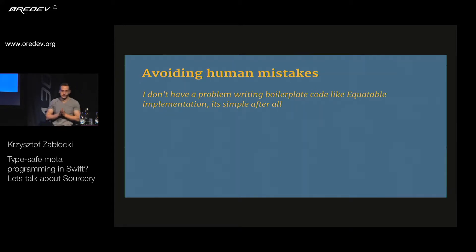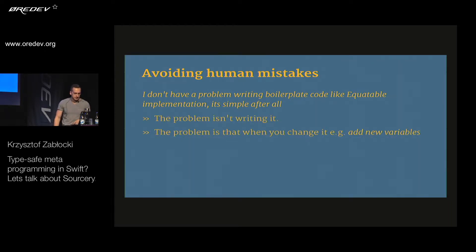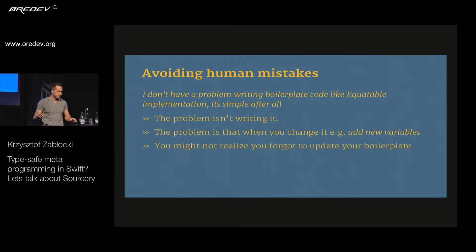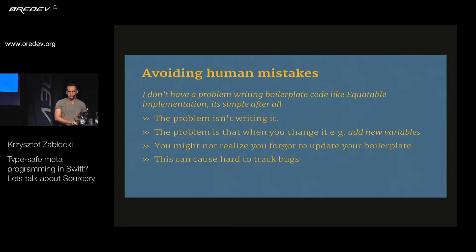What I want to focus on is avoiding human mistakes. Writing any of that boilerplate is not really a big deal — it's pretty straightforward. But the problem isn't writing it. The problem is that when you add a new variable, bugs appear. People forget to update the boilerplate, and the bugs that this can cause can actually be really hard to track. You usually don't find them in code review.